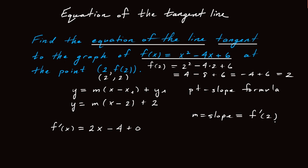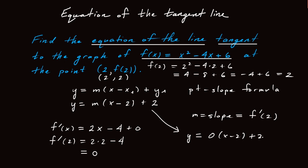We want to find f prime of 2 — that's our slope. So we plug in 2 for x: we get 2 times 2 minus 4, which is 0. So the slope is 0. That means we write y equals 0 times x minus 2, plus 2. This part goes away, so we just get y equals 2. That is the equation of our tangent line.